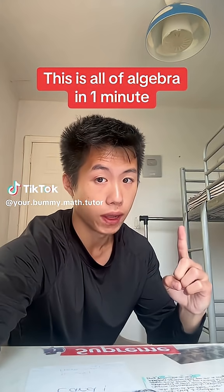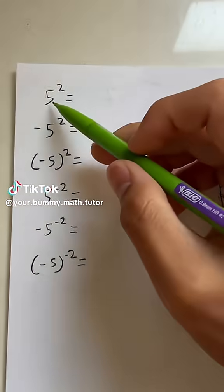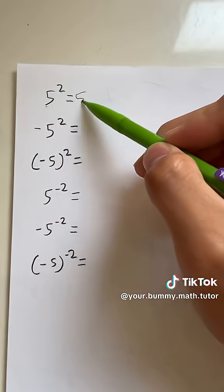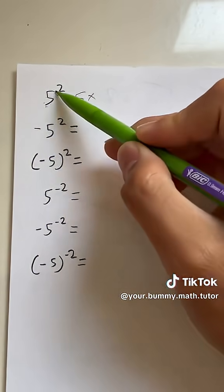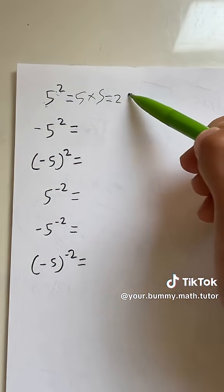All right, this is all of algebra in one minute. Okay, so let's break it down. 5 to the second power - we have a base of 5, and we have to multiply it by itself two times. 5 times 5, which will give you 25.